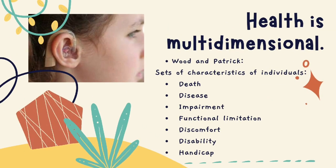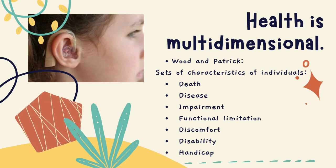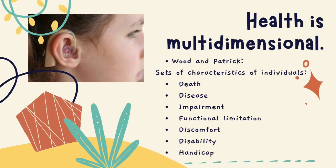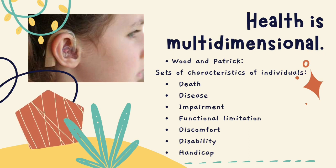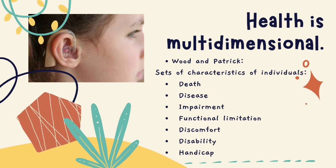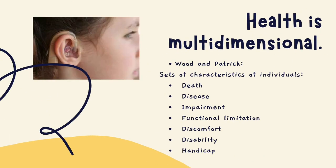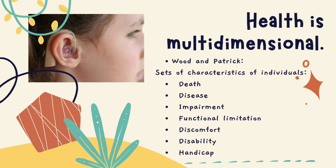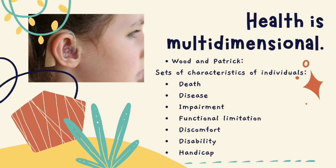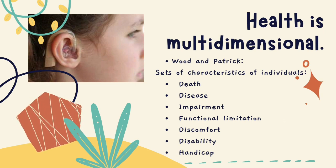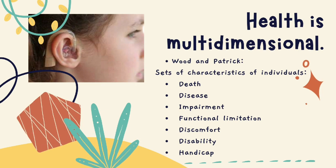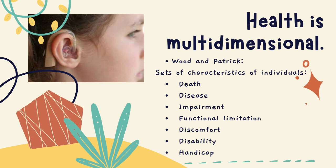There is another definition of health in which health is defined as multidimensional. It is determined by political, socio-economic, cultural, environmental, philosophical, vocational, and nutritional factors — meaning health is a wide aspect covering almost every aspect of an individual. According to Wood and Patrick, there are certain sets of characteristics of an individual such as death, disease, impairment, functional limitation, discomfort, disability, and handicap.